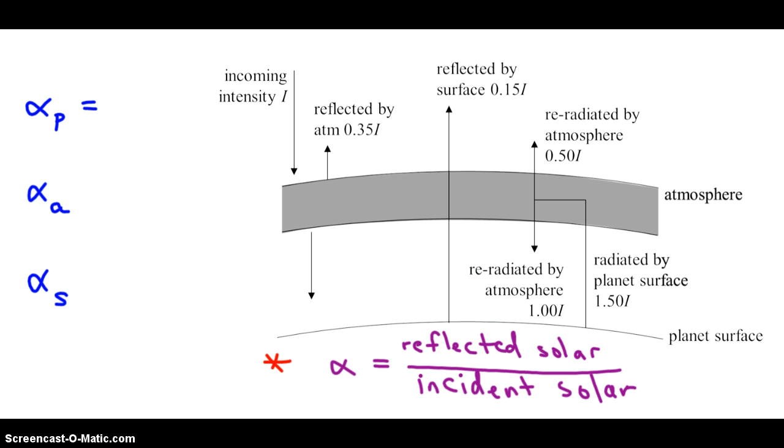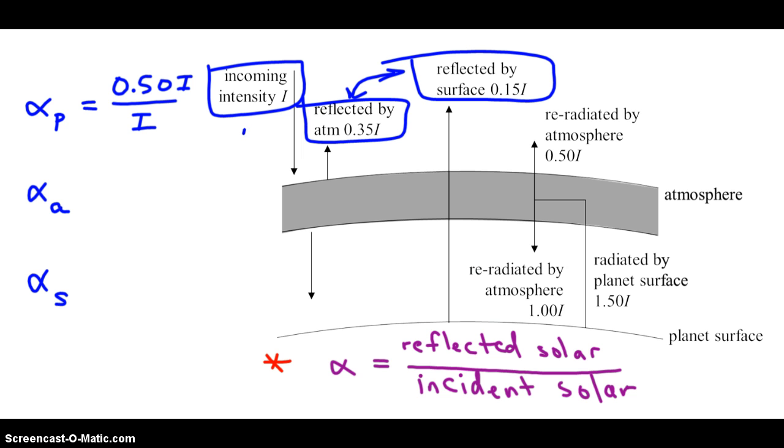The albedo of the planet, that's the first thing. So in the numerator, we add up the total solar radiation reflected by the entire planet. That means atmosphere and surface together, because those are both part of the planet. So we add those two up in the numerator, and together they reflect 0.50i, that's just 0.35 plus 0.15. How much radiation from the sun is incident on the planet? It's just the value i. So I add this plus this in the numerator, and that's the denominator, and I get the i's cancel out, and this is just 0.5.